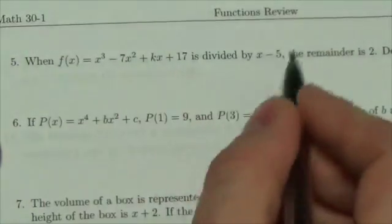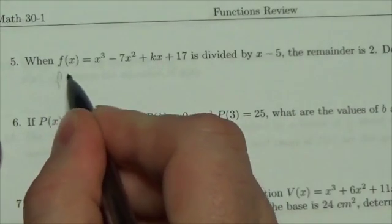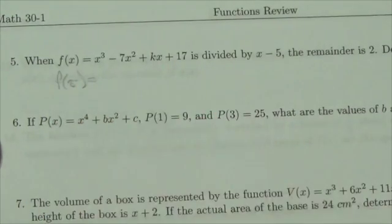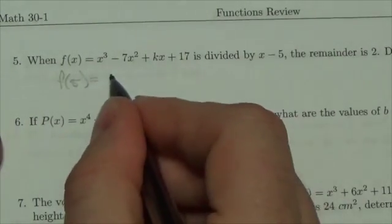So, we know that if we're dividing by x minus 5, we know that if we then evaluate this at 5, that the result should be the remainder. And in this case, that means the result should be 2.